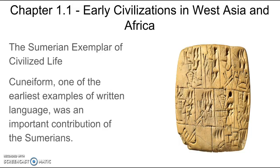Cuneiform, one of the earliest examples of written language, was an important contribution of the Sumerians. Sumerians are known for producing an early language that was based on pictures and symbols as one of their many achievements.